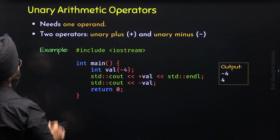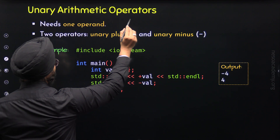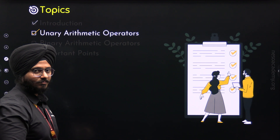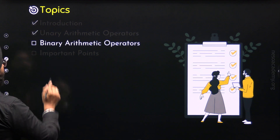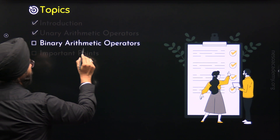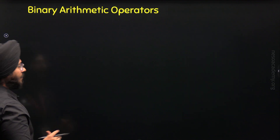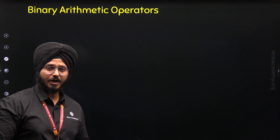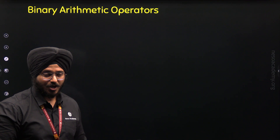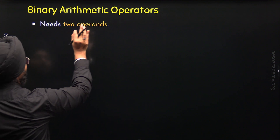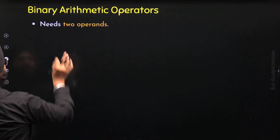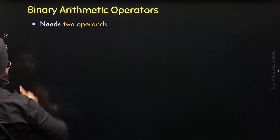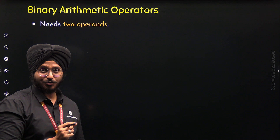With this we have understood unary arithmetic operators properly. Now let's move to the third topic where we will understand binary arithmetic operators. So what is a binary arithmetic operator? A binary arithmetic operator is an operator which can operate on two operands — it needs two operands. Here the word binary represents two.